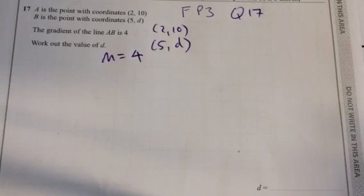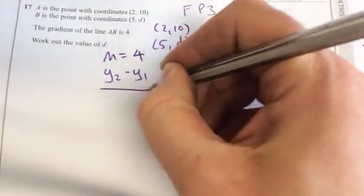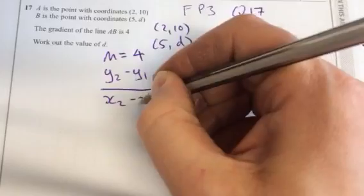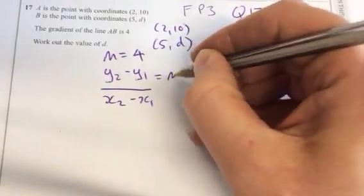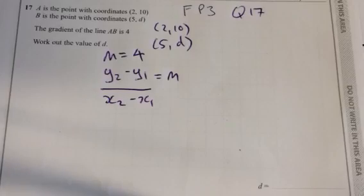First we have to use the gradient formula, which is y2 minus y1 over x2 minus x1. So that's the formula for the gradient: y2 minus y1 over x2 minus x1.